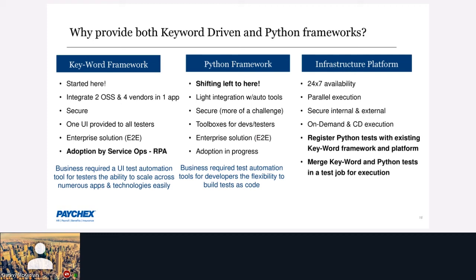We didn't want to throw away or duplicate infrastructure, so we leveraged existing infrastructure for this implementation. The two key additions were: registering Python tests on the infrastructure where keyword tests execute — which includes an automatic inspection step — and merging Python tests with keyword tests in a job. A job is a collection of tests with configurable dependencies, so if test one — say, login — fails, you don't run the other 99 tests, reducing false failures.